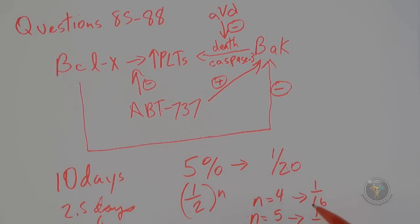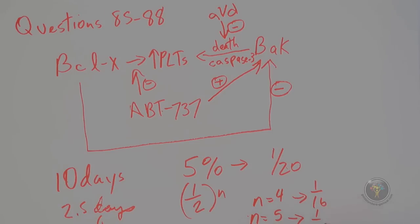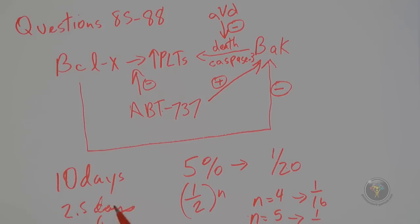Since it's less than 1/20, the number of half-lives is between 4 and 5, giving a half-life between 2 and 2.5 days, probably closer to 2 days. So question 86 answer is B.